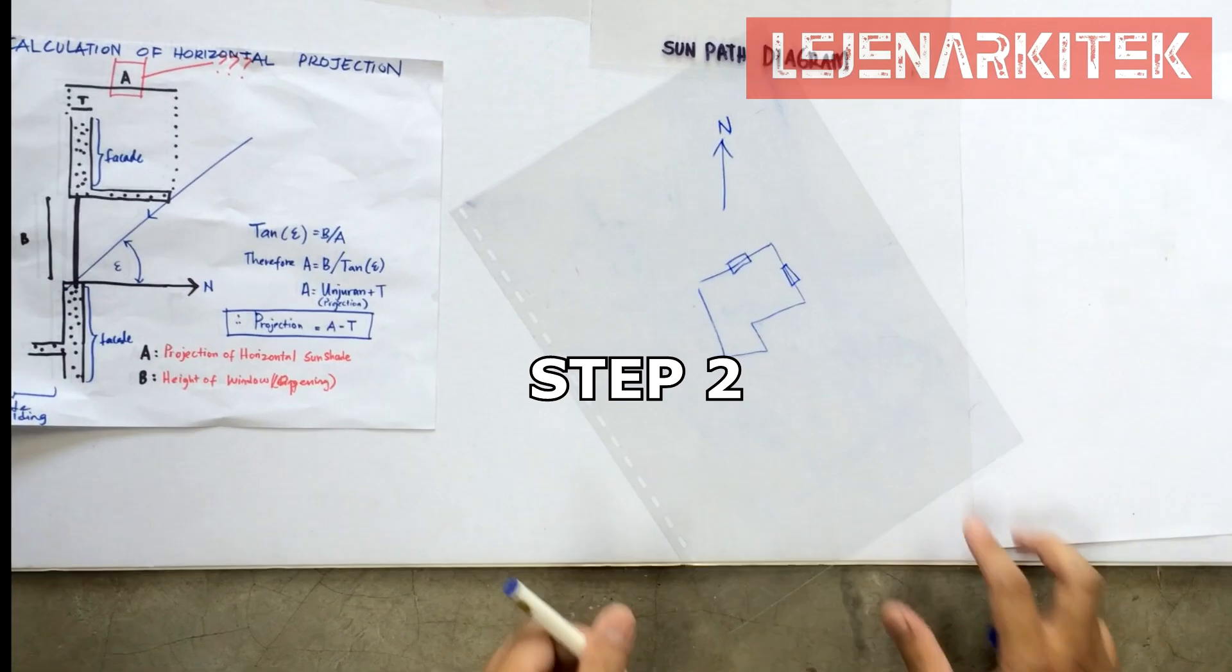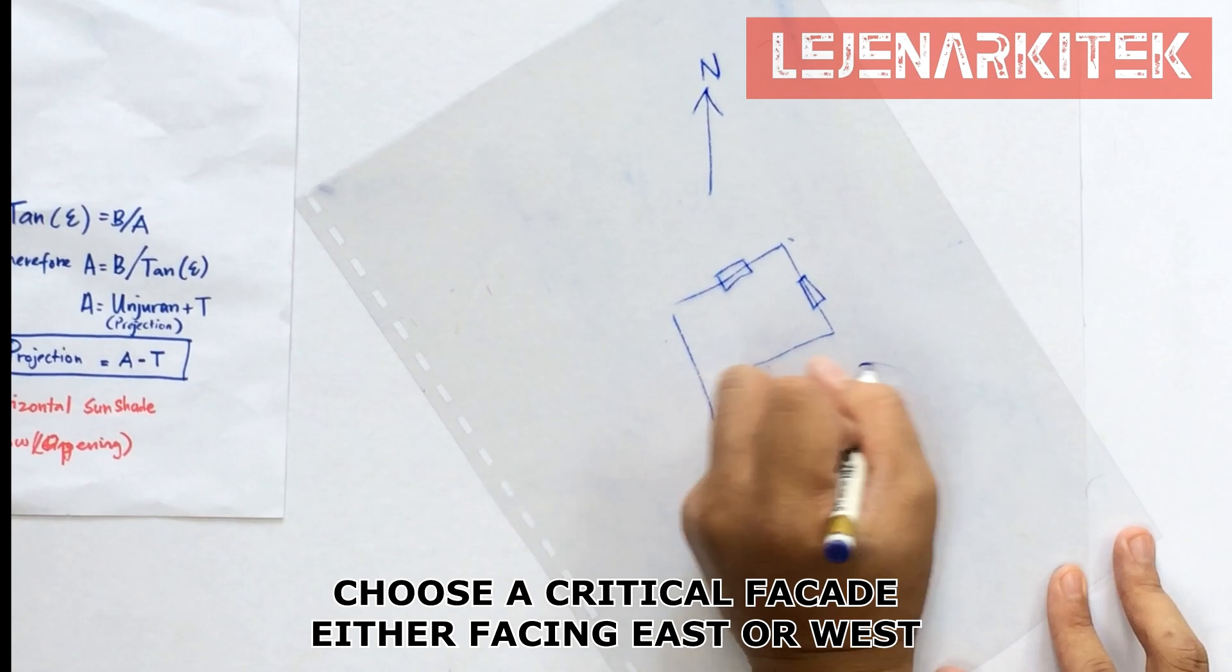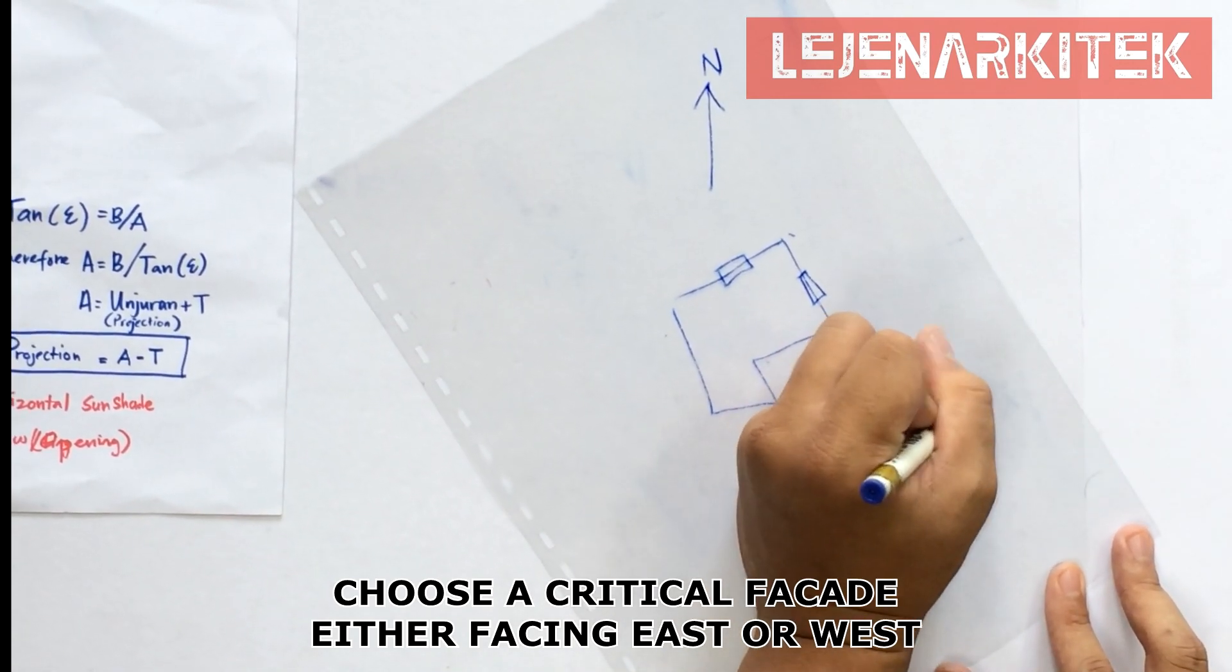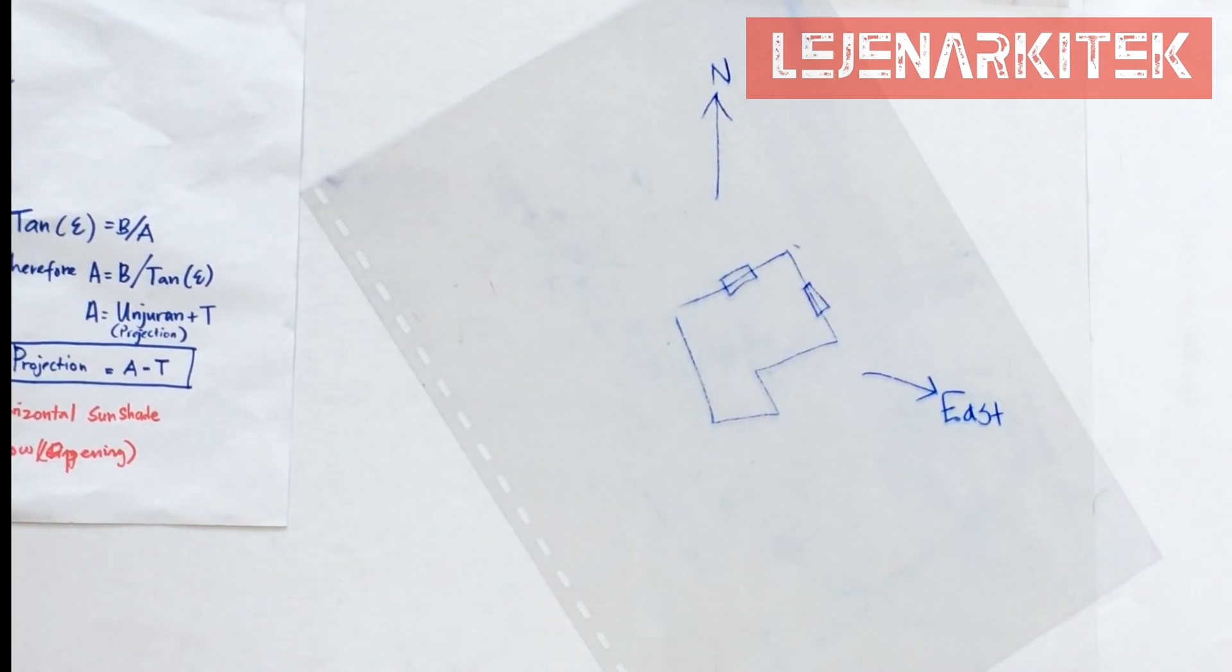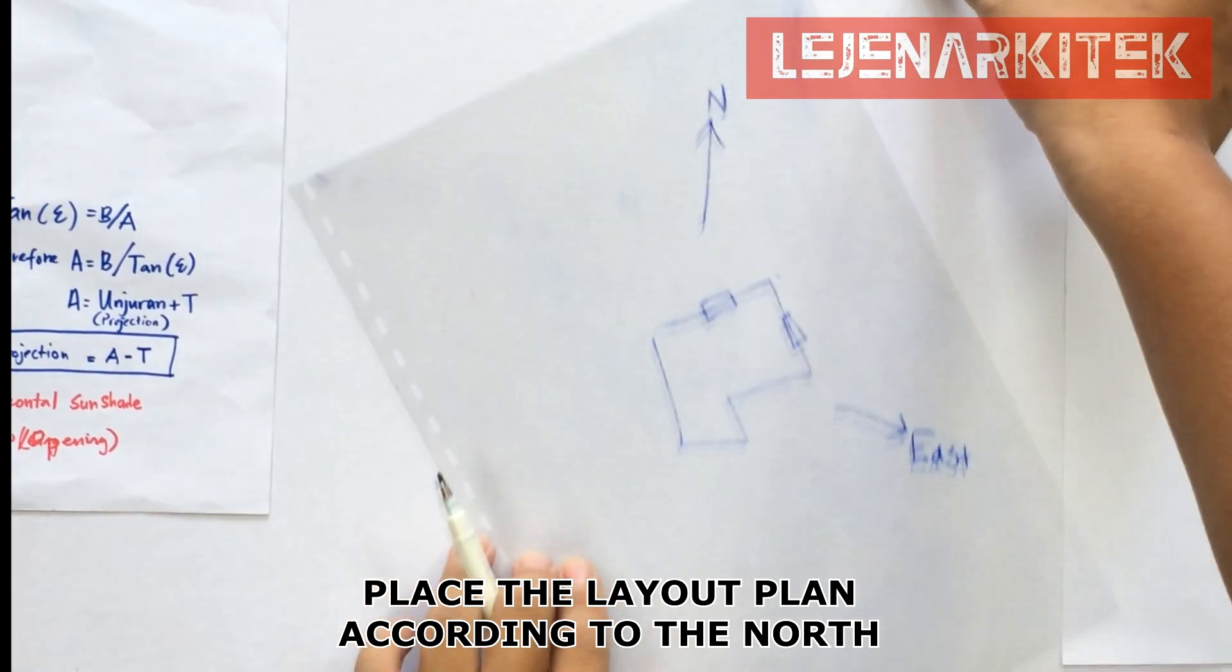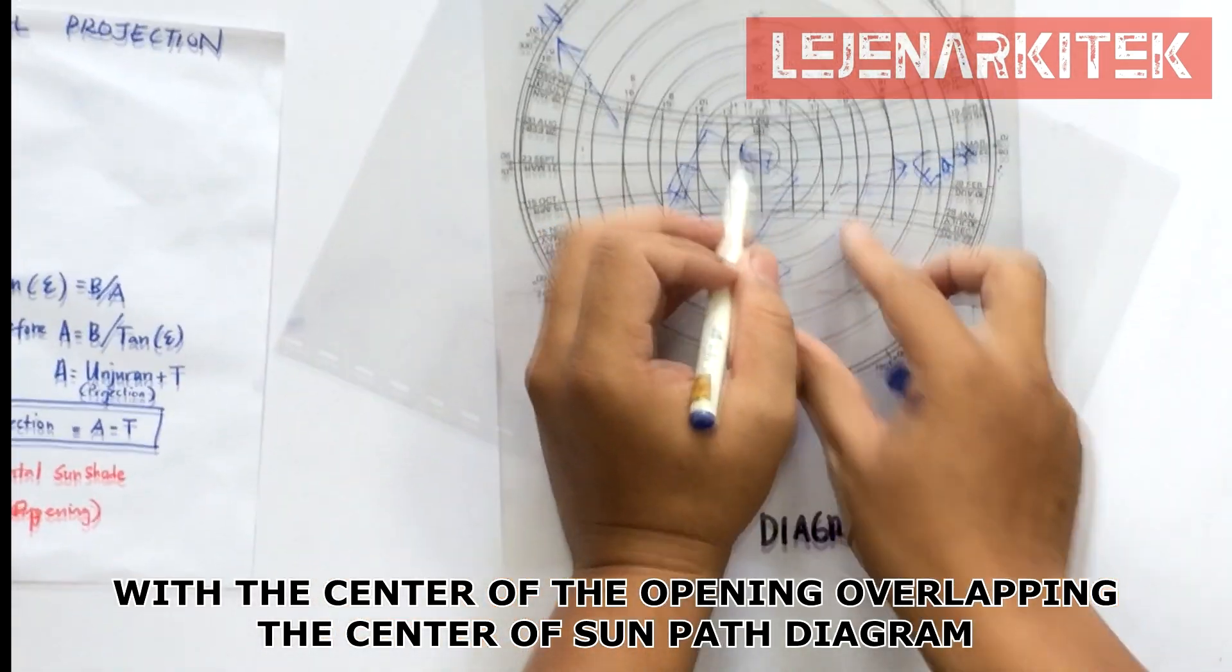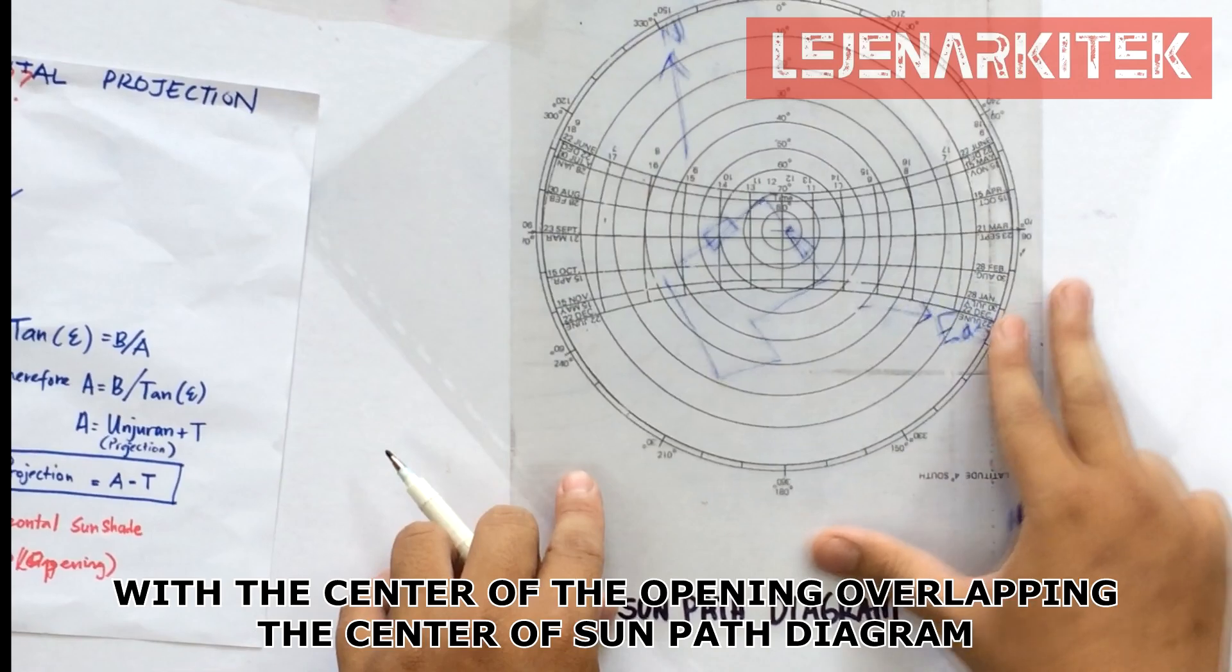Second, we have to choose a critical facade facing the east or either the west. But in this video, we're going to show you the facade from east. Step three, place the layout plan according to the north point onto the sun path diagram with the center of the opening overlapping the center of the sun path diagram.